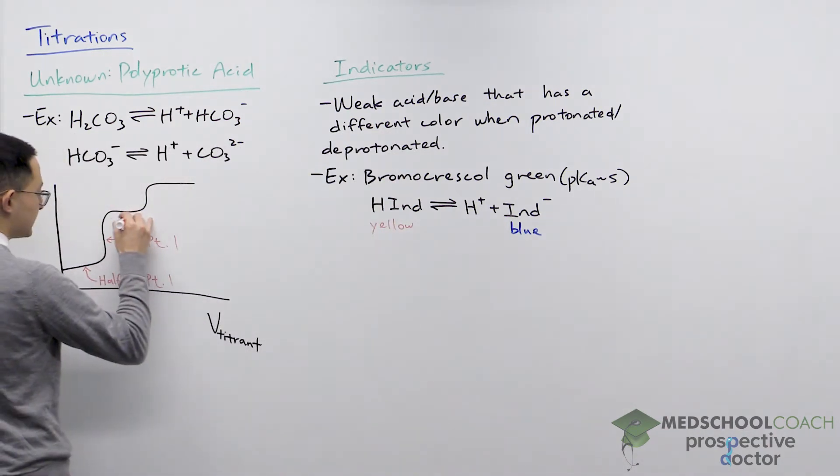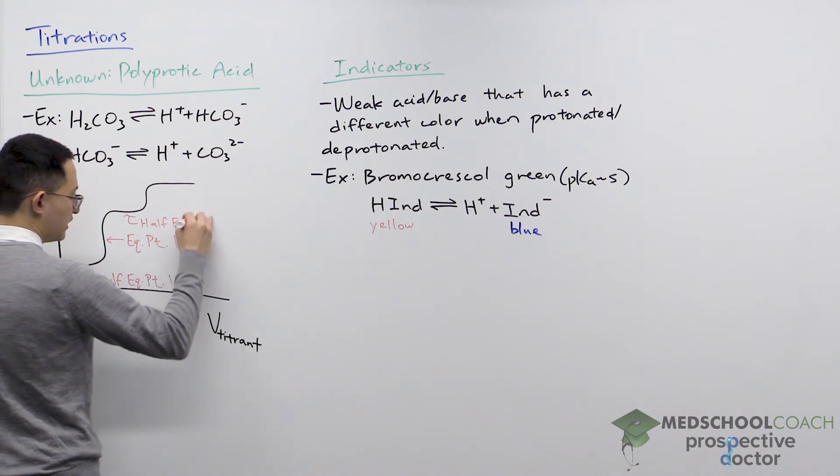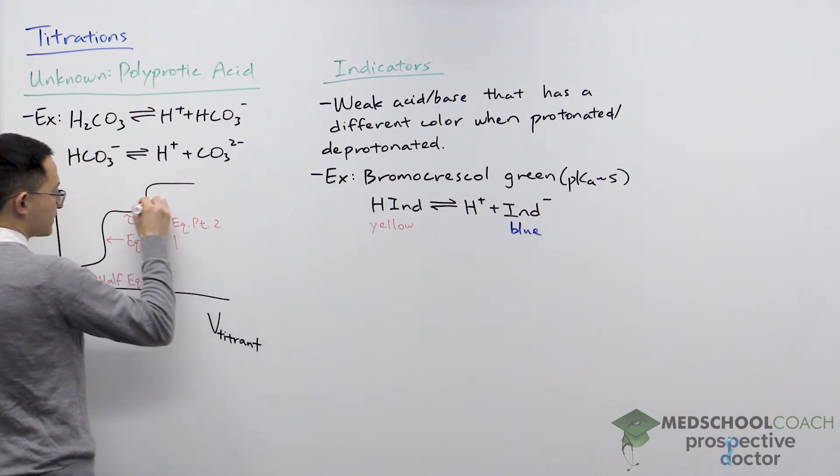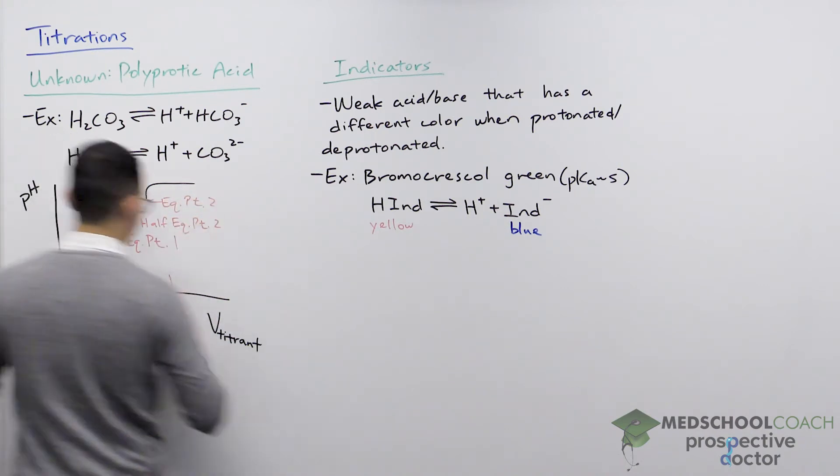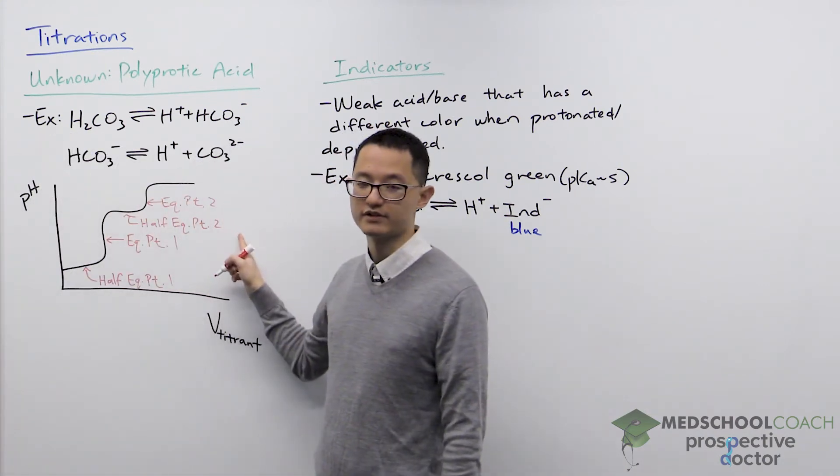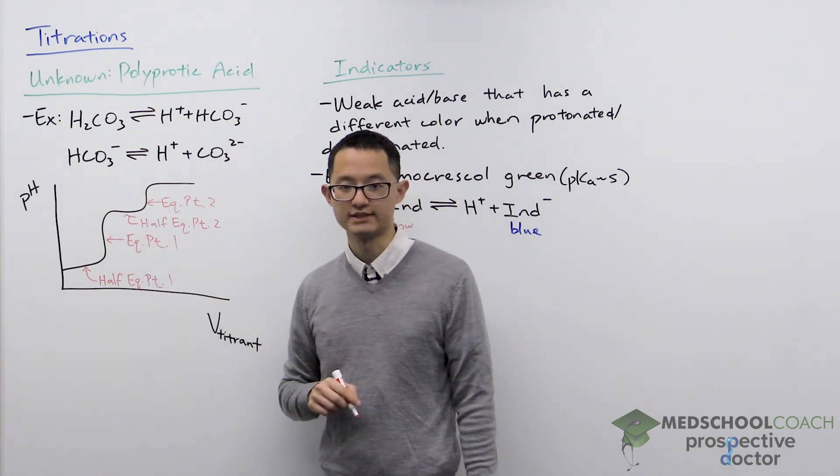I can then draw in the second half equivalence point as well as the second equivalence point. These two points refer to the dissociation of the second hydrogen ion from bicarbonate.